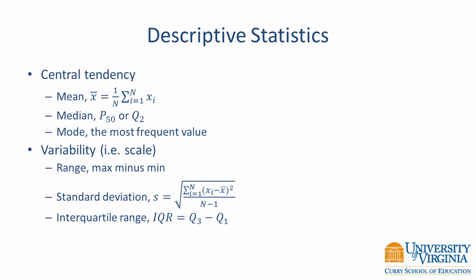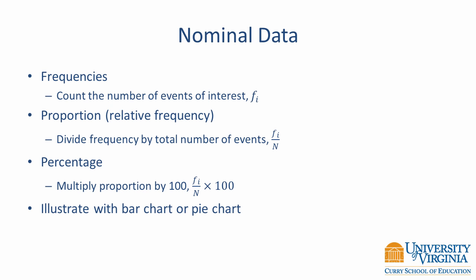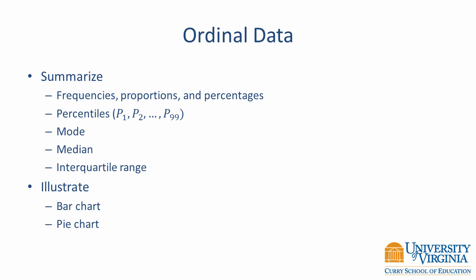You now have various choices for describing central tendency and variability — which one do you use? It depends on the type of data. With nominal data, you summarize information through frequencies, proportions (also known as relative frequency), or percentages, and illustrate it with a bar chart or pie chart. Ordinal data is summarized similarly, but you have the additional choice of using percentiles, the mode or median for central tendency, and the interquartile range for variability. With ordinal data, you can also use a bar chart or pie chart.